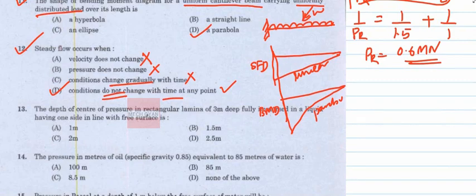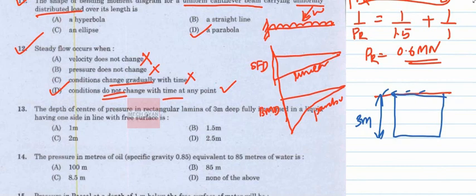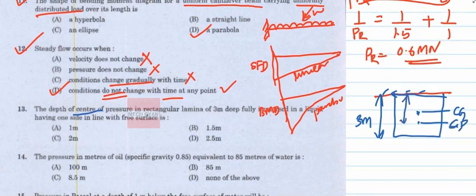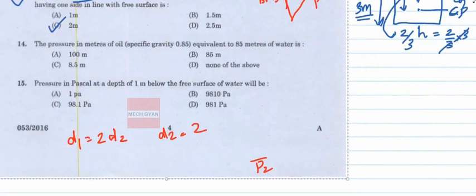Question 13: A rectangular lamina is 3 meters deep, fully immersed in a liquid with one side in line with the free surface. The depth of the center of pressure for a rectangular lamina is given by (2/3)H, where H is the depth of immersion. So depth = (2/3) × 3 = 2 meters. The answer is option C.